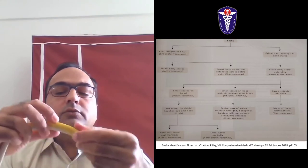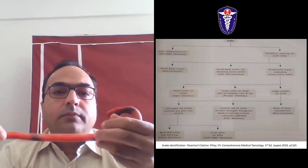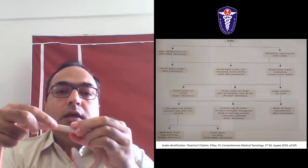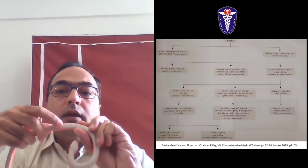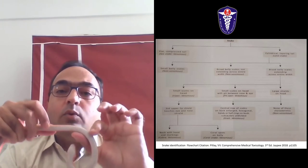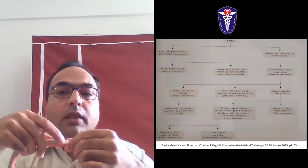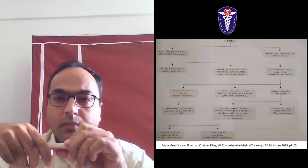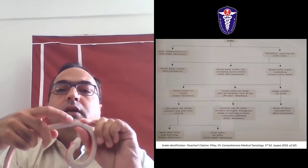If the snake has small belly scales appearing on the dorsal surface, but the ventral surface belly scales are not small, then it is non-venomous. If the belly scales are broad but not extending completely across the width - like the python or boa constrictors - it is also non-venomous. But if the broad belly scales extend across the entire width, then it is a venomous snake.